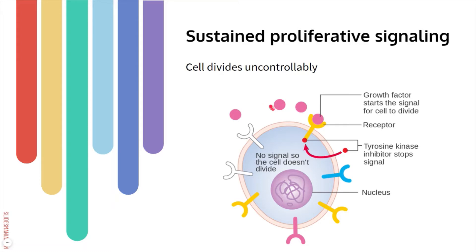Sometimes cancer cells make the signals themselves, or they keep the receptors that respond to a growth signal permanently active. There are different mechanisms by which cancer cells do this, but the big idea is that they're not waiting for signals to divide — they're just doing it by themselves.